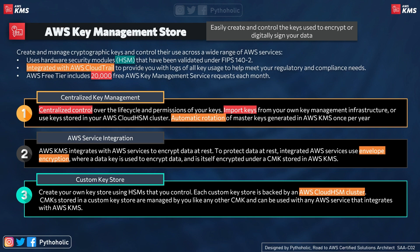The most important thing that makes KMS so secure is that it uses hardware security modules (HSM) validated under FIPS 140-2. FIPS 140-2, or Federal Information Processing Standard 140-2, provides a very high level of security and is currently being superseded by FIPS 140-3. You can read more about it in the documentation.